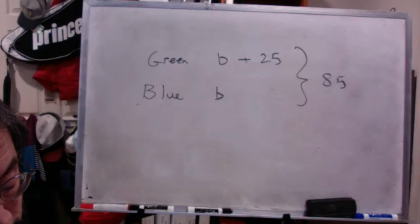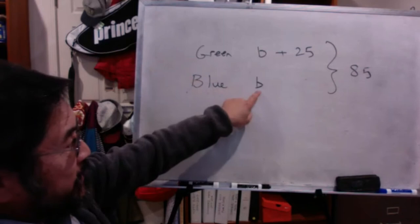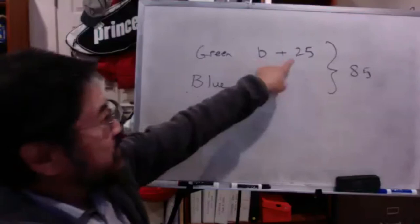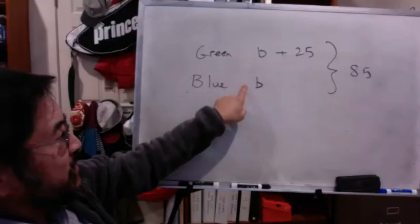So basically this is the way Tanishka set it up, right? She called B the number of balloons. So the green balloons is B plus 25, the blue balloons is just B. So she says two of these plus this equals 85, right?